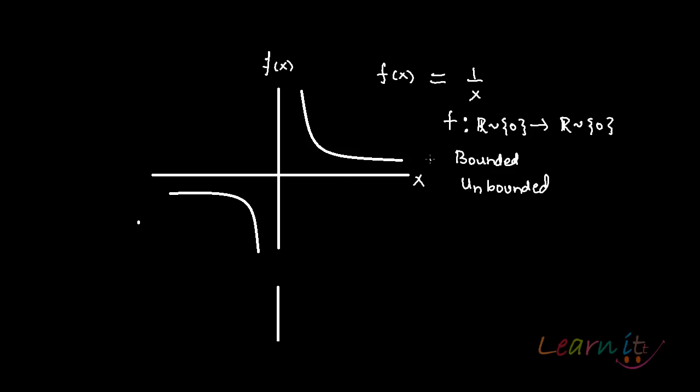Now here if you see, whatever value of x you put, the value of f(x) would be 1 by that, 1 over that. So if you have 1, it will be 1. If you have 2, it will be half and so on and so forth. It will keep on moving. Say here the highest point is 1 and so on and so forth. There is no end to the value.